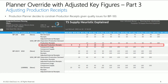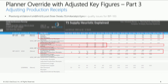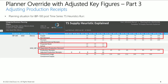Let's see how the planning results change post-TS supply heuristic run. Note that there are no production receipts till week 31 now, and only half the receipts needed in weeks 32 and 33. This is also visible in the projected stock and deficit key figures from week 31 to week 33.